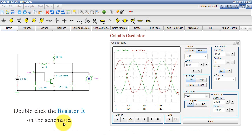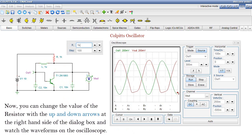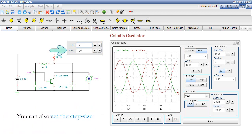Double-click the resistor R on the schematic. Now, you can change the value of the resistor with the up and down arrows at the right-hand side of the dialog box, and watch the waveforms on the oscilloscope. You can also set the step size and change it to 500 ohms.